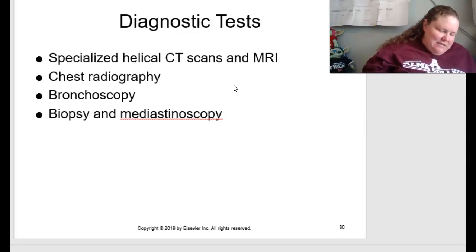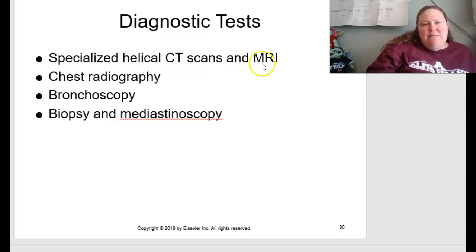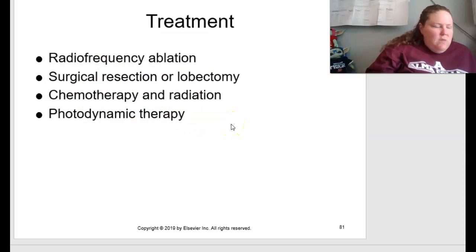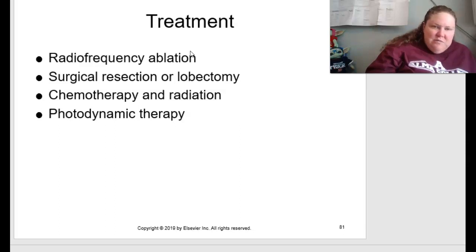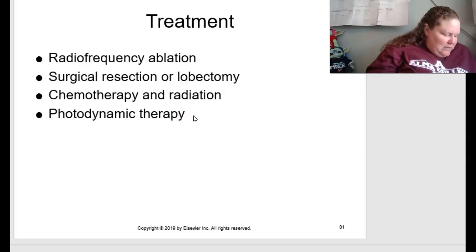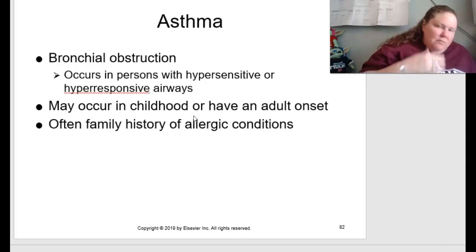Diagnostic tests for lung cancer include specialized helical CT scans or MRIs, chest radiography, bronchoscopy and biopsy, and mediastinoscopy. Treatments discussed on page 298 include radiofrequency ablation for small tumors, surgical resection or lobectomy for localized lesions, chemotherapy and radiation in conjunction with surgery or as palliative treatment (though many tumors are not responsive), and photodynamic therapy where a chemical injected into the body migrates to tumor cells and is activated by laser light to destroy cancer cells. Prognosis is poor unless the tumor is detected in very early stages.